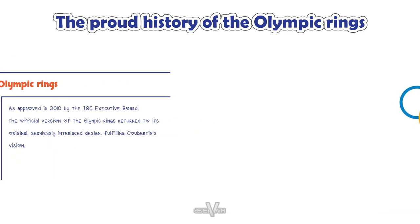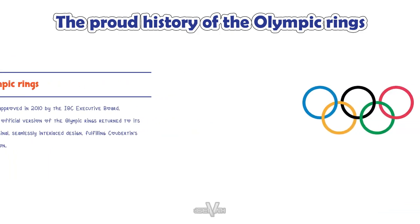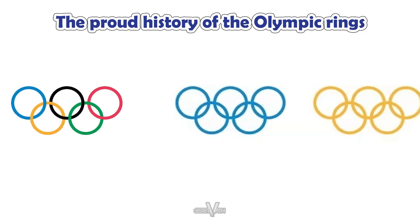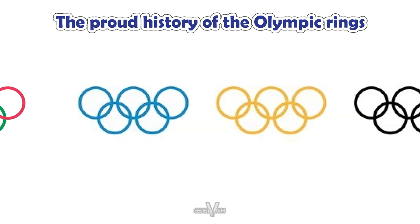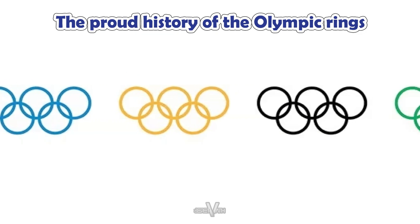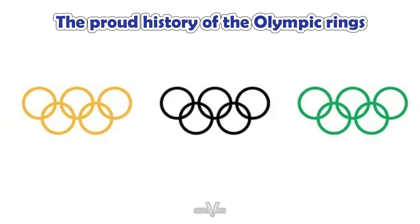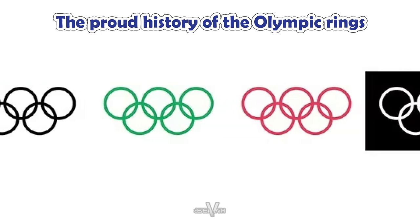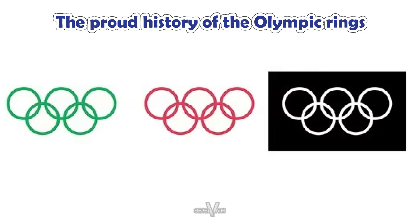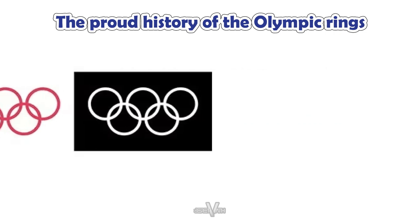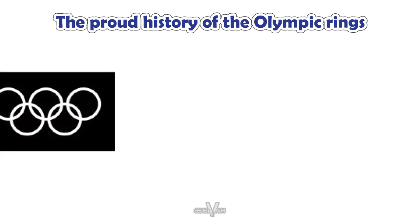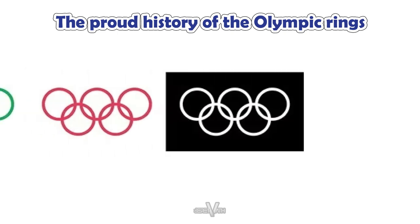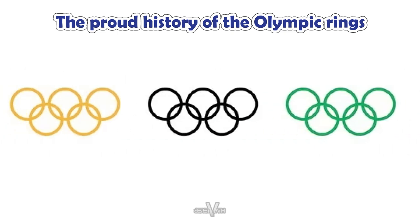Official version of the Olympic rings. Today, there are seven official versions of the Olympic rings. The full-color version on its white background is the preferred version. Indeed, the full-color Olympic rings are the embodiment of Pierre de Coubertin's original vision.